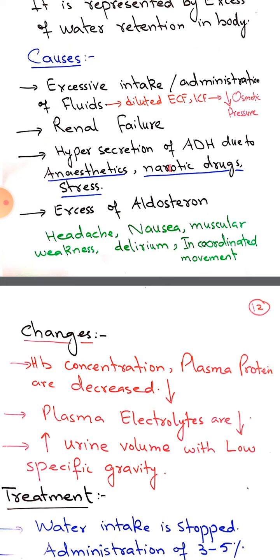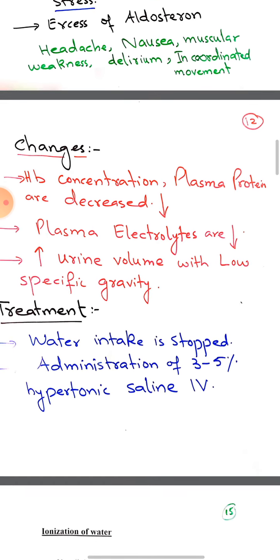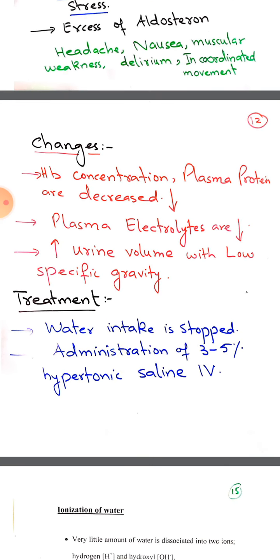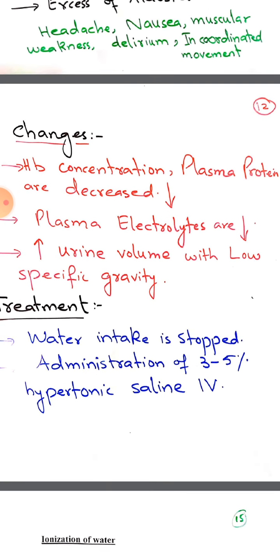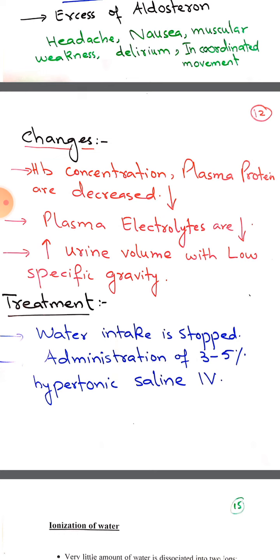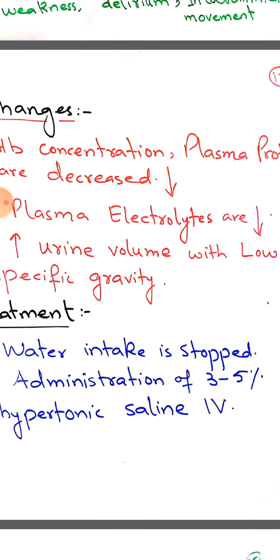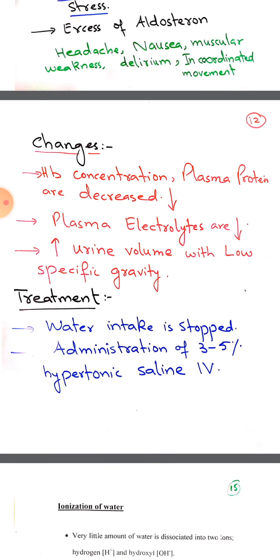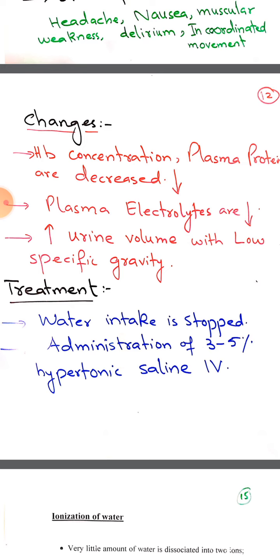Clinical conditions of water intoxication include nausea, delirium, abnormal mental state, incoordinated movement, and muscular weakness. Blood investigations show decreased hemoglobin concentration, decreased plasma protein count, and less plasma electrolytes. High urine volume with low specific gravity is observed because the body wants to rid itself of excess water, producing more diluted urine.